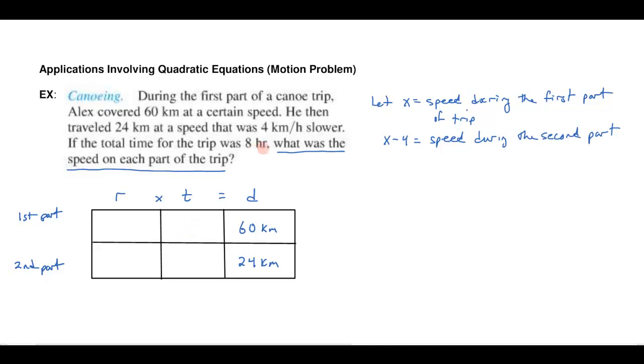Now I also don't know the time for the first part. The problem does give us a time that says though that the total time was eight hours. So the time for the first part wasn't eight hours, it's something less than that. And the time for the second part was something less than that. But together they add up to be eight hours. But I do know that the rate during the first part is x. And the rate for the second part is x minus four.